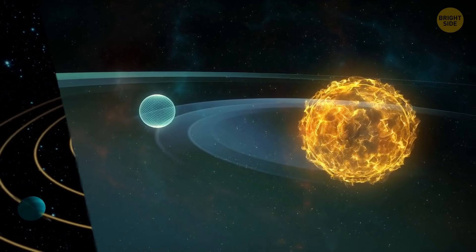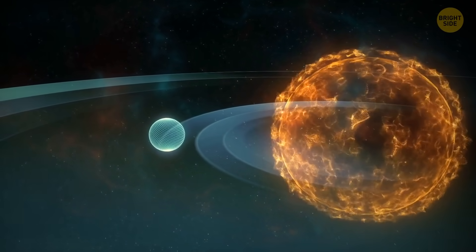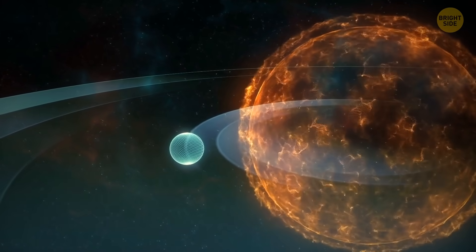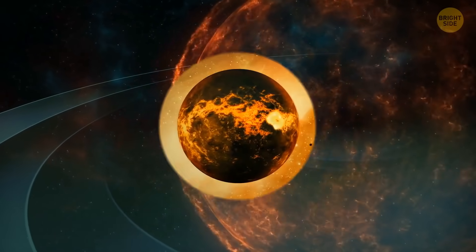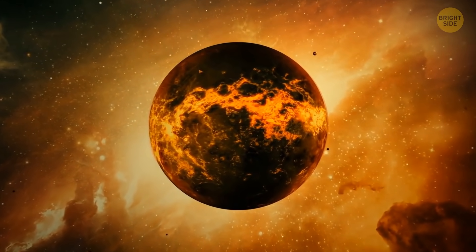It's been 7.5 billion years since 2020, and the sun began to expand, absorbing planet after planet: Mercury, Venus, Earth. But the living conditions on Earth were unsuitable for us long before that.